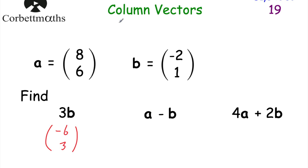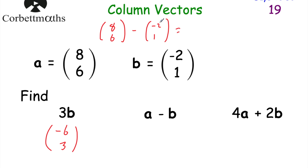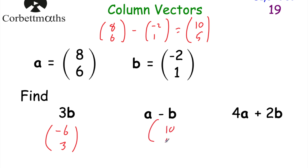For a take away b, that's (8, 6) subtract (-2, 1). 8 minus minus 2 — we're subtracting a negative, so it's going to be 10. And then 6 take away 1 is 5. So a subtract b equals (10, 5). Well done if you got that.